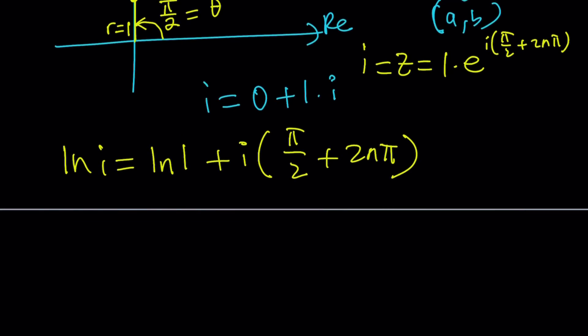Cool. Now, what is ln 1? ln 1, in this case, we're dealing with a real number. In the real sense, ln 1 is equal to 0. So this would be 0, and you're going to end up with the value of ln i in general form, which is i times π over 2 plus 2nπ. So in other words, ln i is a multiple of i. Some thing times π.